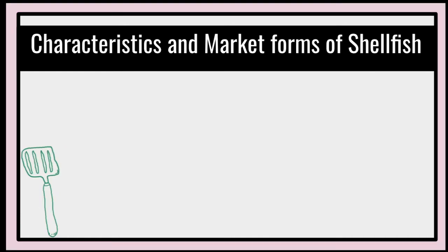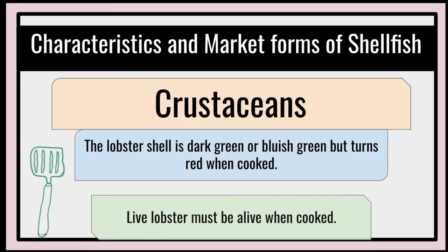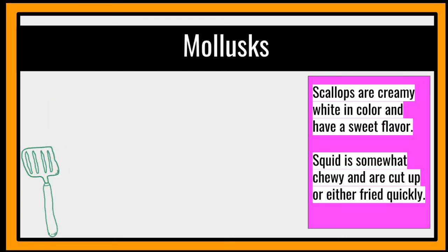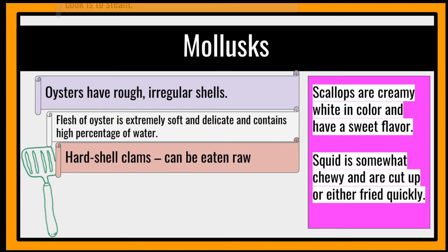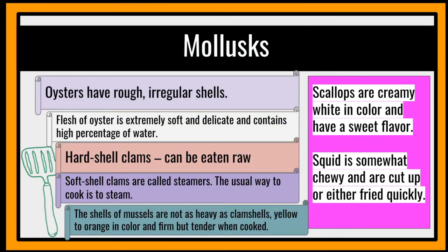There are characteristics and market forms of shellfish. For crustaceans that have an outer shell and jointed legs, the lobster shell is dark green or bluish green but turns red when cooked. Lobster shall be alive when cooked so that it will be fresh. For mollusks: scallops are creamy white in color and have a sweet flavor. Squid is somewhat chewy and is cut up or fried quickly. Oysters have rough, irregular shells, and the flesh of oyster is extremely soft and delicate and contains a high percentage of water. Hard shell clams can be eaten raw; soft shell clams are called steamers and the usual way to cook is to steam. The shells of mussels are not as heavy as clam shells, yellow to orange in color, and firm but tender when cooked.